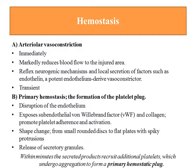Then comes primary hemostasis — the formation of the platelet plug. There is disruption of the endothelium due to trauma, which exposes the subendothelial von Willebrand factor and collagen. This will provoke platelet adherence and activation, because von Willebrand factor attaches to receptors on the platelets through GP1B. Then there is a shape change of the platelets — from small rounded discs to flat plates with spiky protrusions — giving the platelets an increased surface area.